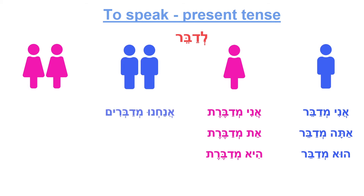Masculine plural: Anachnu medabrim, Atem medabrim, Hem medabrim. It means we are talking, you guys are talking, and they are talking.